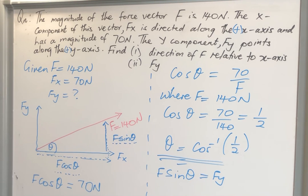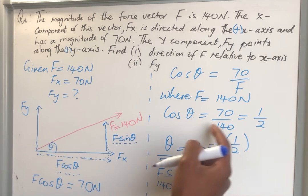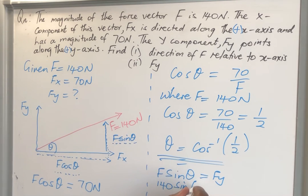You have theta now, you have F. So it's going to be your F, which is 140. So it's going to be 140 sine—in place of theta, you're going to put the angle that you would have gotten here after you punched cos inverse of half. This is going to be your angle. And whatever you're going to get here, it's going to be your Fy, and then you will be done with your question.